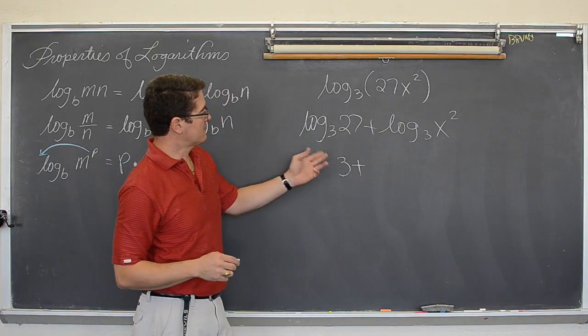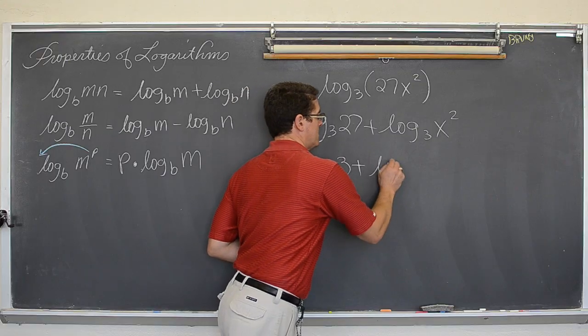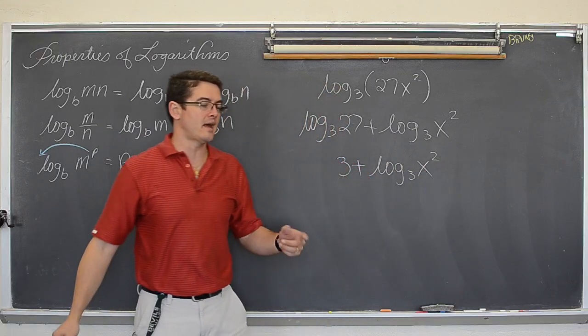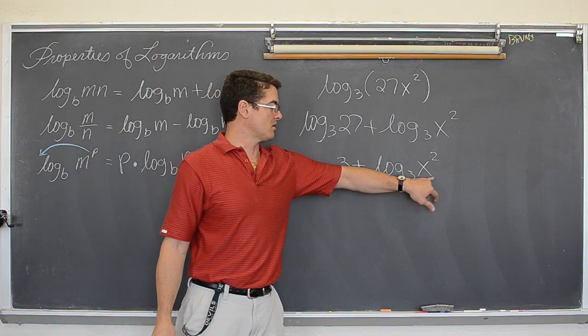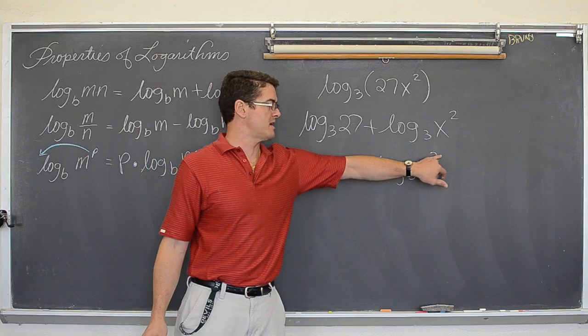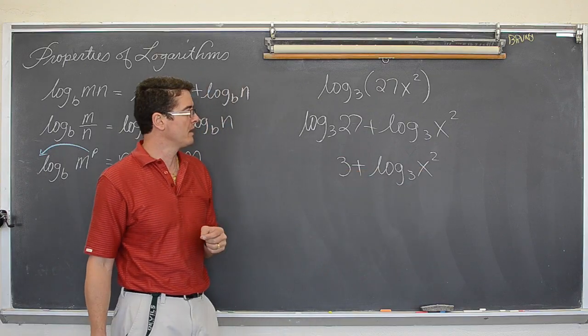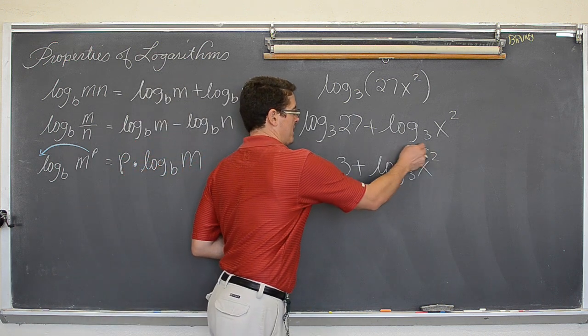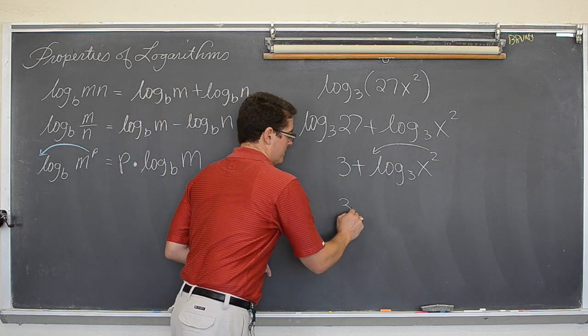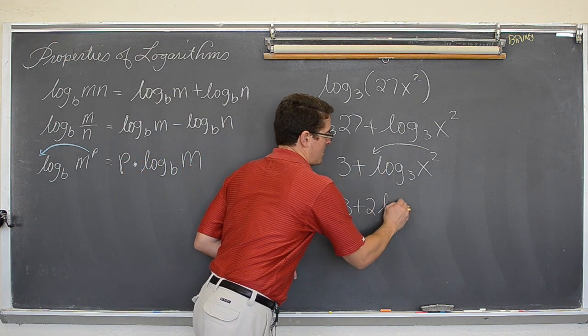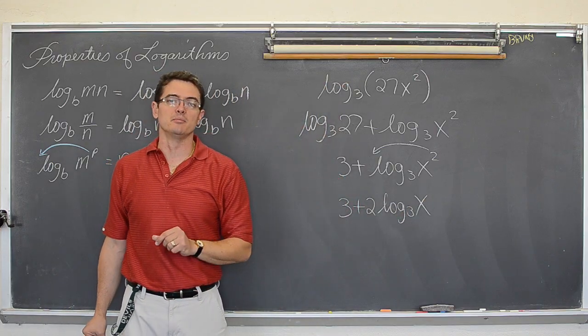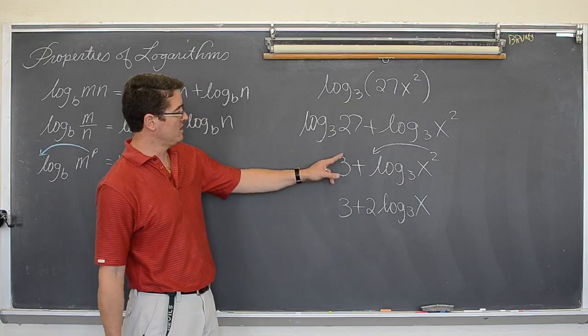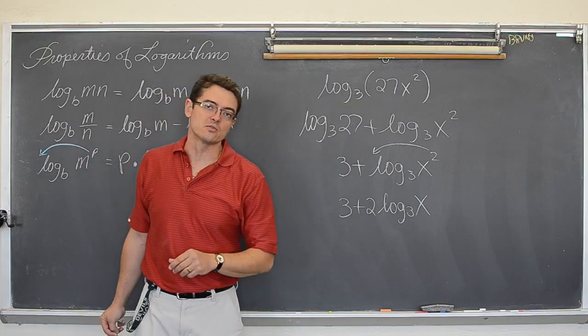Now, we have got three plus the log base three of x squared. Now, we have got that leading coefficient of one. We are taking the log of sort of like a single factor that has its own exponent, the power of two, and that can now be dropped down out front. And we get three plus two times the log base three of x. And that expression has now been completely expanded and evaluated a little bit with the log base three of twenty seven.